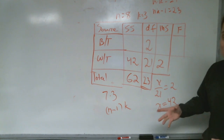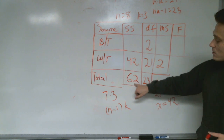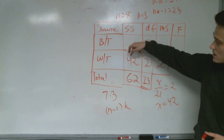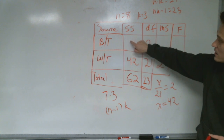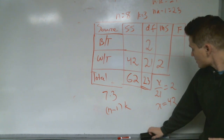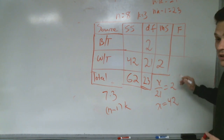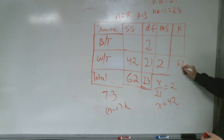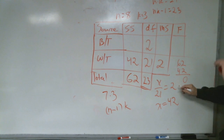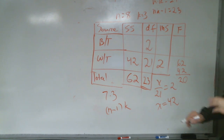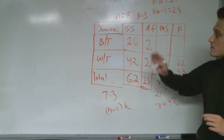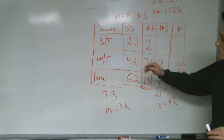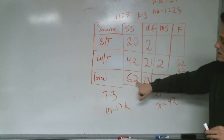Because sum of squares can be added, the total is 62 and within is 42. We subtract 42 from 62 — so 62 minus 42 equals 20. Therefore, 20 is the sum of squares for between. So we have 20 for between, 42 for within, and 62 total.